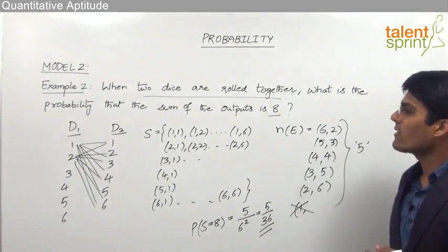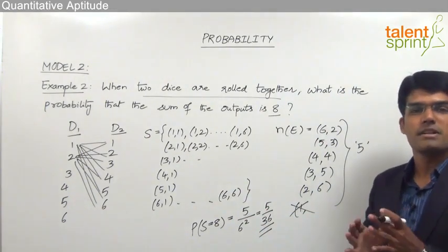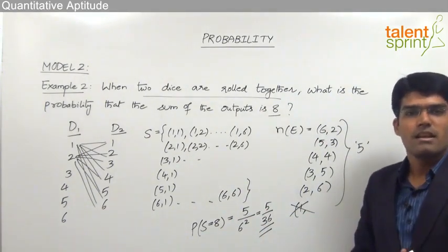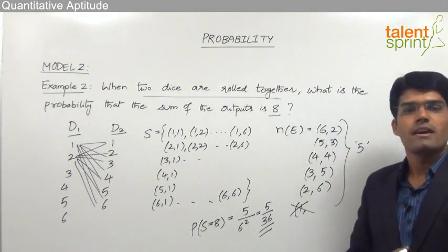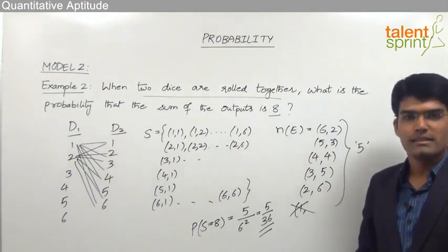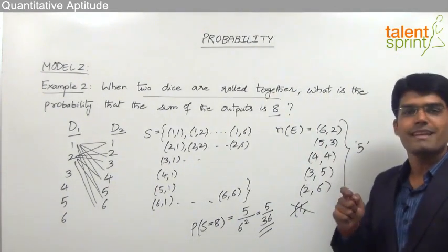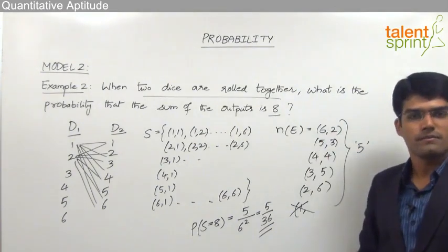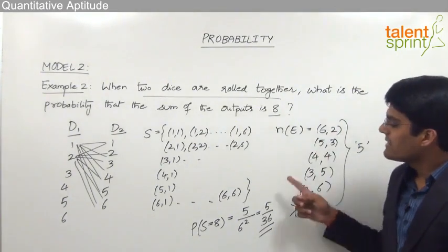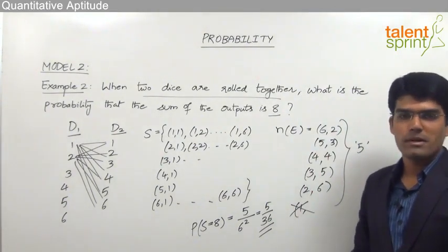This is how we solve questions related to getting a particular sum when two dice are rolled together. We only need to check all outcomes where we can get the required sum, then divide by the total number of outcomes to get the required probability.